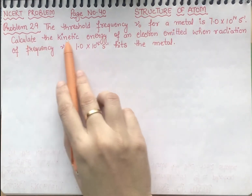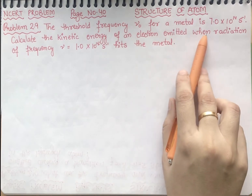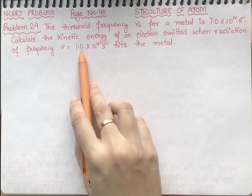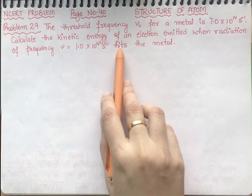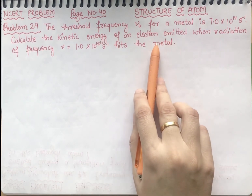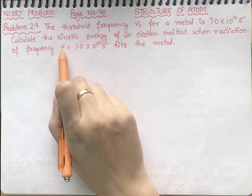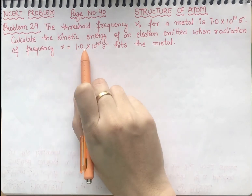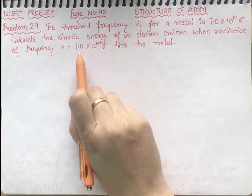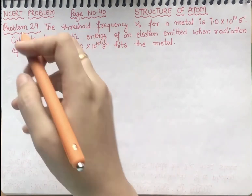Now they are asking us to calculate the kinetic energy of an electron emitted when radiation of frequency ν = 1.0 × 10¹⁵ s⁻¹ hits the metal. A radiation of frequency ν = 1.0 × 10¹⁵ s⁻¹ is hitting the metal surface. What will be the kinetic energy?